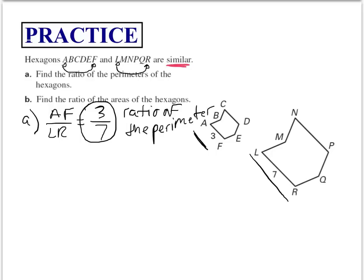Part B wants us to find the ratio of the areas of the hexagons. From theorem 11.5, if two polygons are similar with corresponding sides in ratio A to B, then the ratio of their areas is A squared over B squared. We have a ratio of 3 over 7, and that fraction is already simplified, so we square both: 3 squared over 7 squared gives us 9 over 49. We can't simplify that anymore, so that's our final answer.